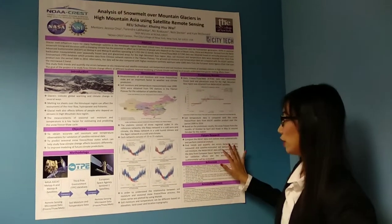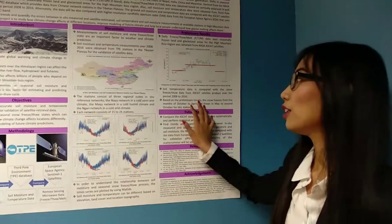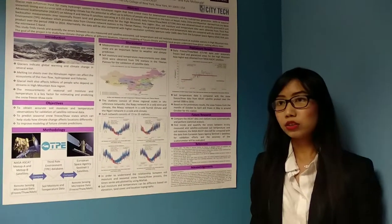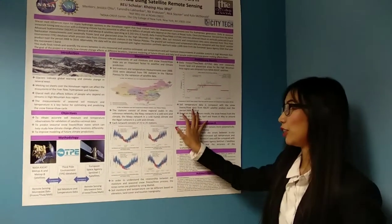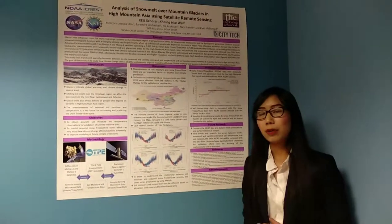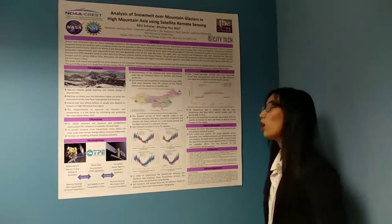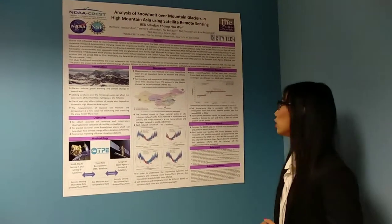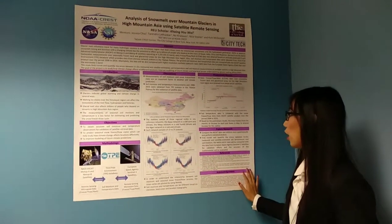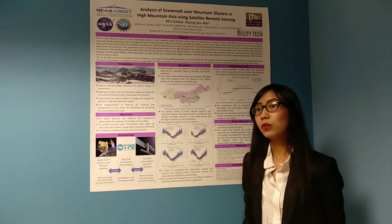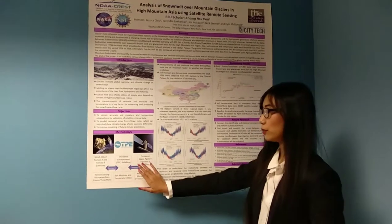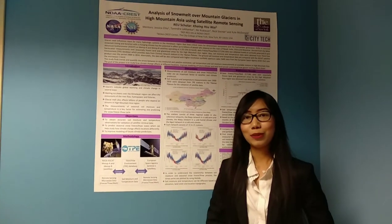For our future research — since this is a year-long project — we will try to figure out a way to compare the NASA AMSR data and the in-situ station data more systematically and through statistical analysis. We will find trends and quantify the error between the in-situ measured data and the satellite remote sensing data. We will also be comparing the NASA AMSR data with the SAR data from the European Space Agency's Sentinel-1 satellites. Thank you so much.